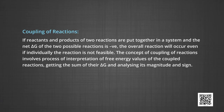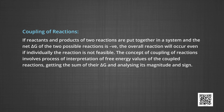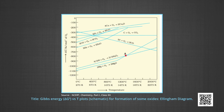A very interesting concept is coupling of reactions. If reactants and products of two reactions are put together in a system and the net ΔG of the two possible reactions is negative, the overall reaction will occur even if individually a reaction is not feasible. The concept of coupling of reactions involves interpreting free energy values of the coupled reactions, getting the sum of their ΔG, and analyzing the magnitude and sign. Such coupling is easily understood through ΔG° versus T plots for the formation of oxides, as shown in figure 1, which are called Ellingham diagrams.